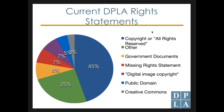8% are identified as government documents—not necessarily as public domain, but as government documents. 7% are missing a rights statement entirely, even though it's a required field. Another 7% have a 'digital image copyright' phrase, where digitizing an item generated a new claimed copyright as of the scan date. Only 5% are identified as public domain, and 3% have a Creative Commons license.